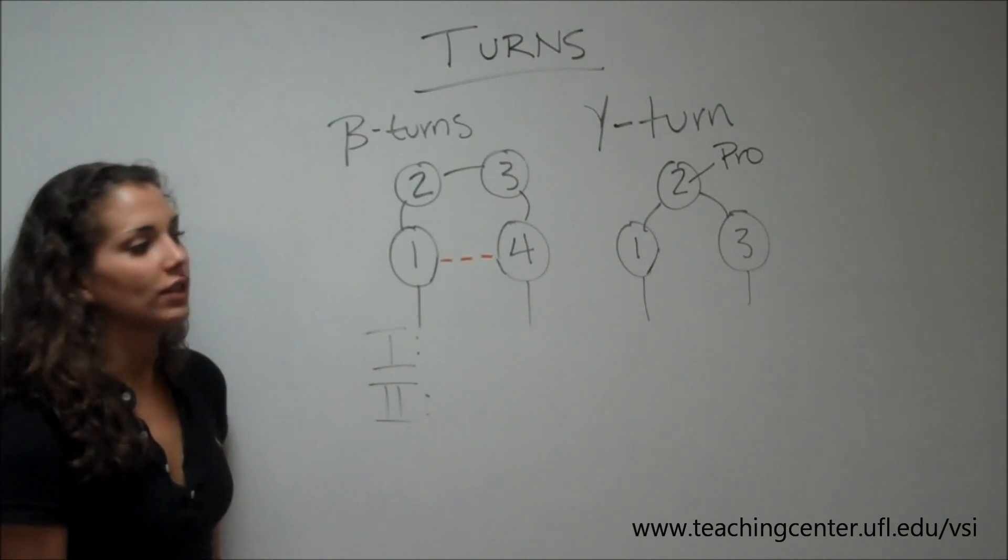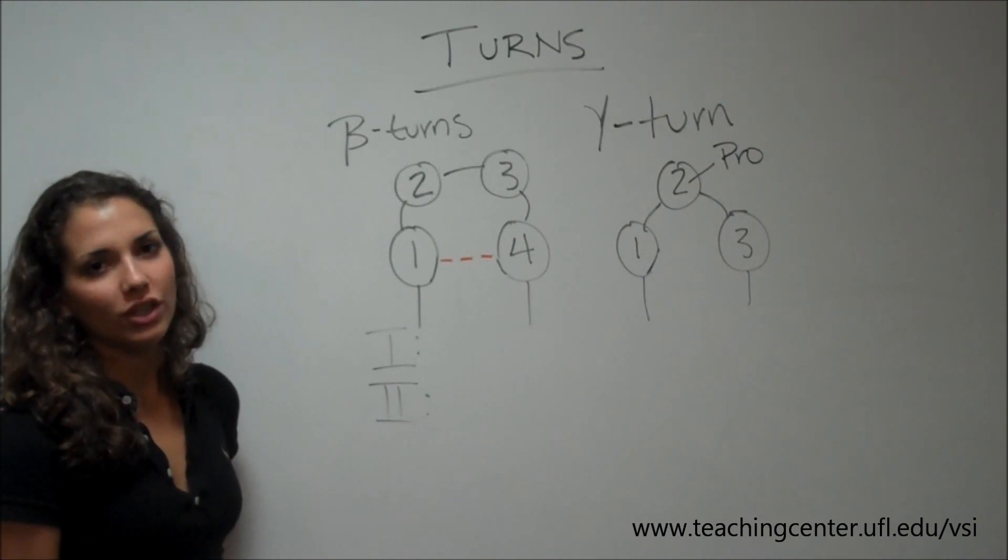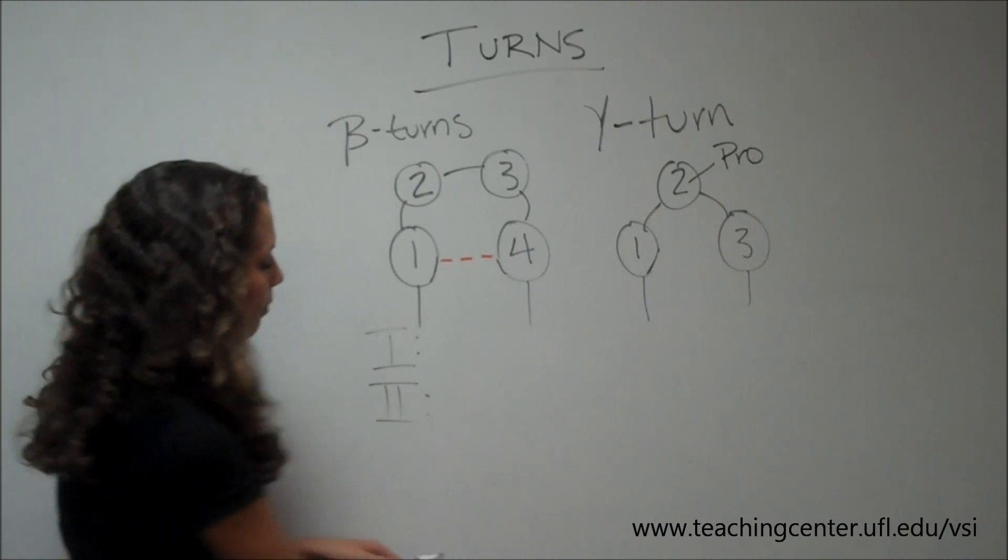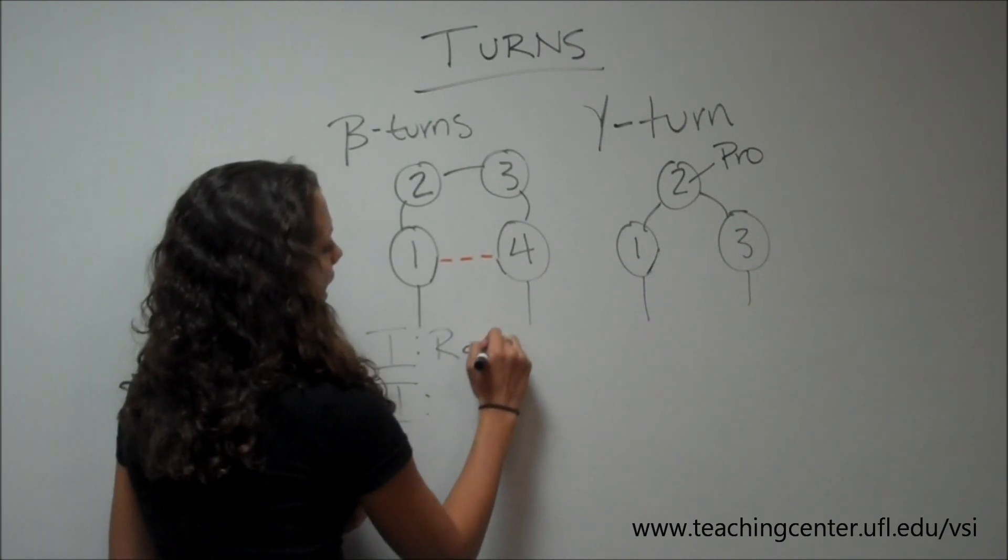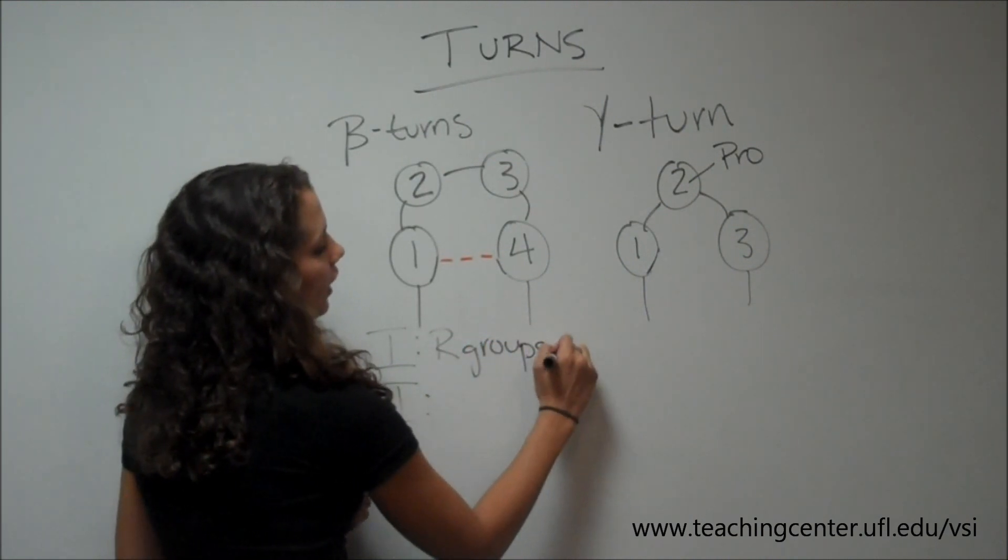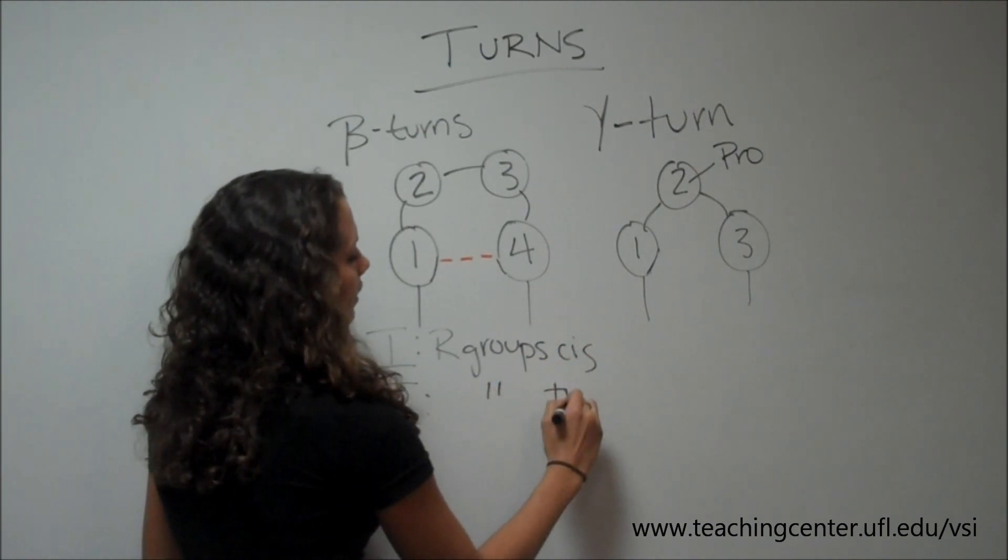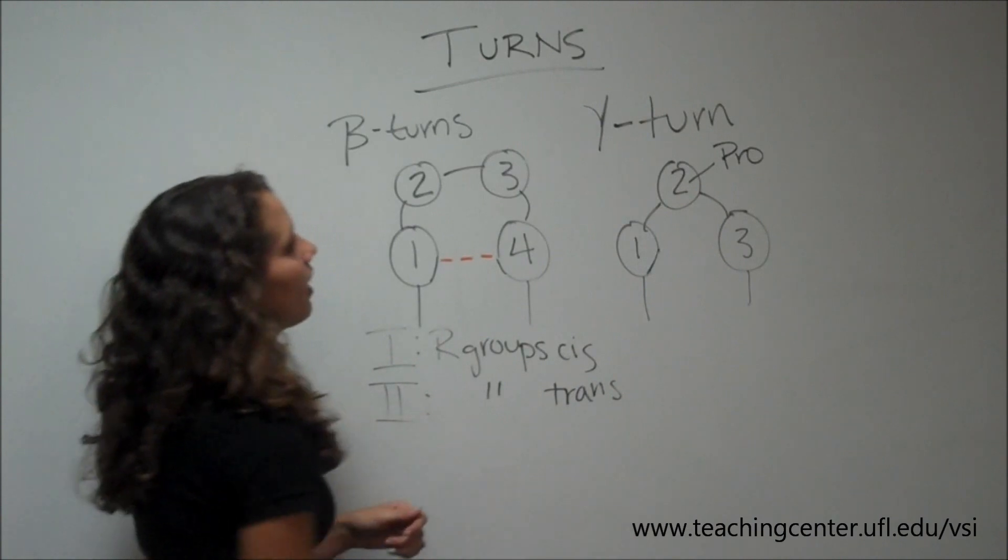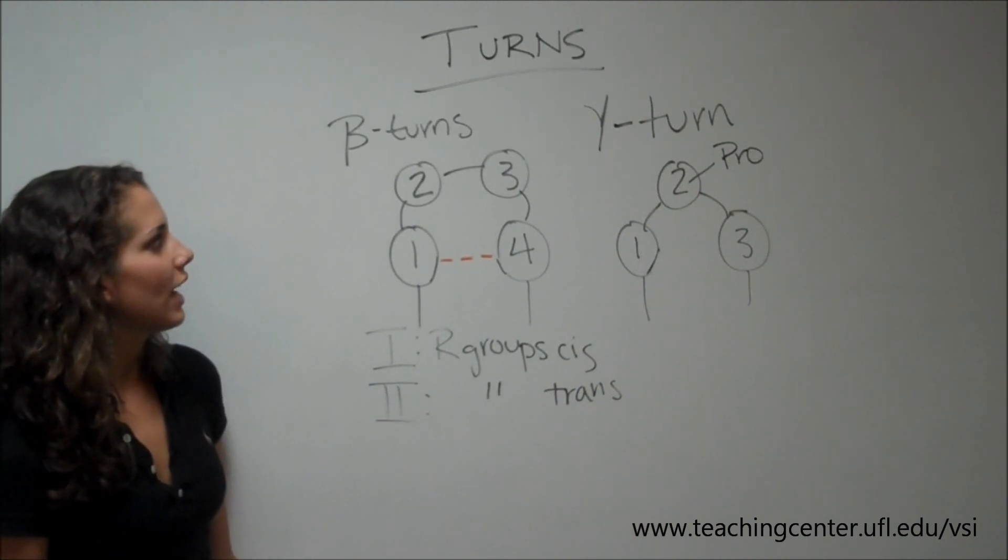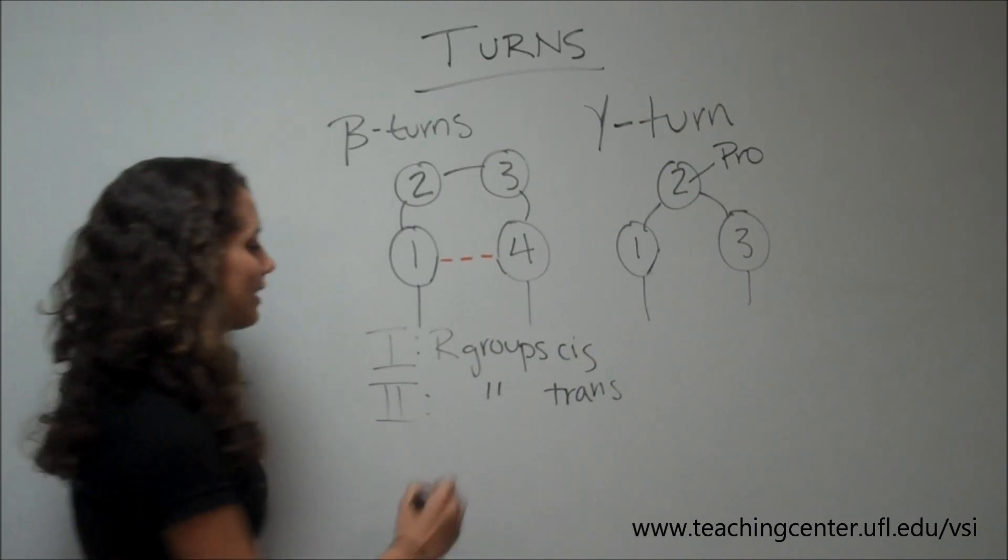Also, the two types are differentiated by the conformation of their R groups. In type 1, the R groups of amino acids 2 and 3 are cis, while in type 2, the R groups are trans. Now, for this reason, amino acid number 3 in the type 2 beta turns is always glycine.